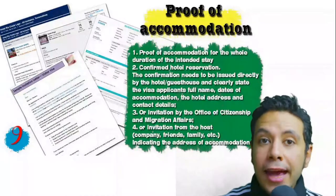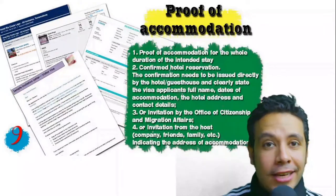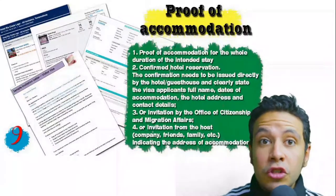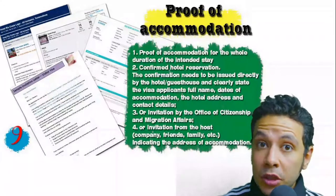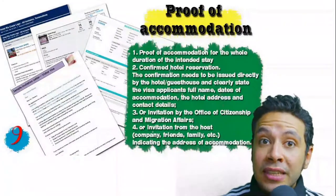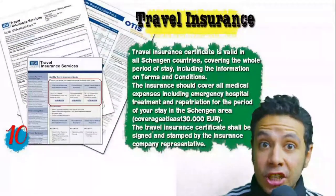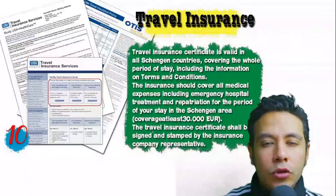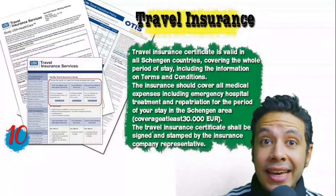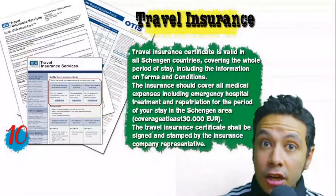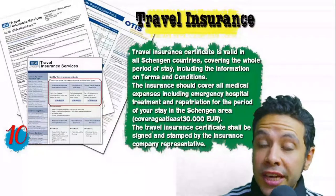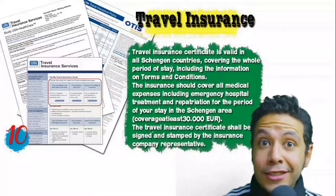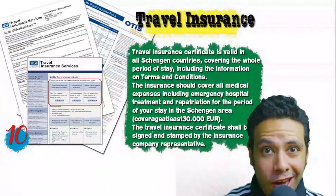If you are invited by a person, the invitation letter should either be mailed directly to the embassy or submitted by you along with a copy of the inviting person's passport. Many Schengen countries also require travel health insurance. You must apply through officially accepted companies, and the insurance coverage must be at least 30,000 euros for the Schengen area. In general, you can apply for this insurance online.